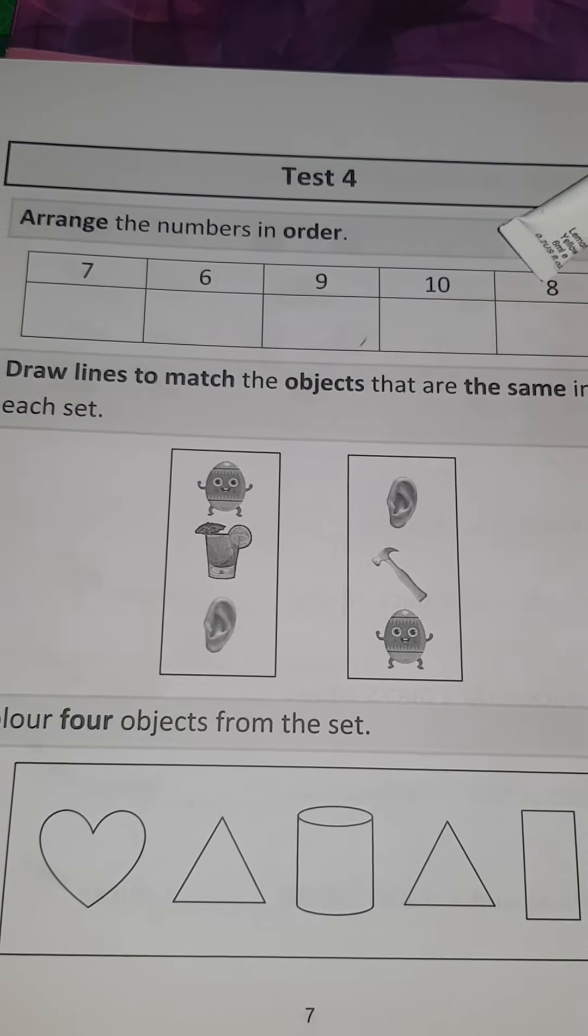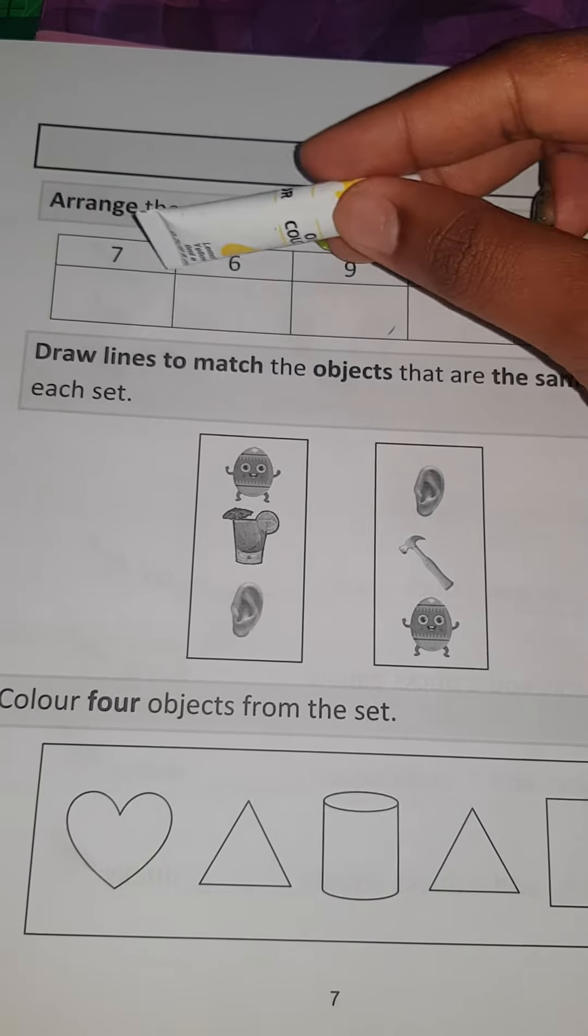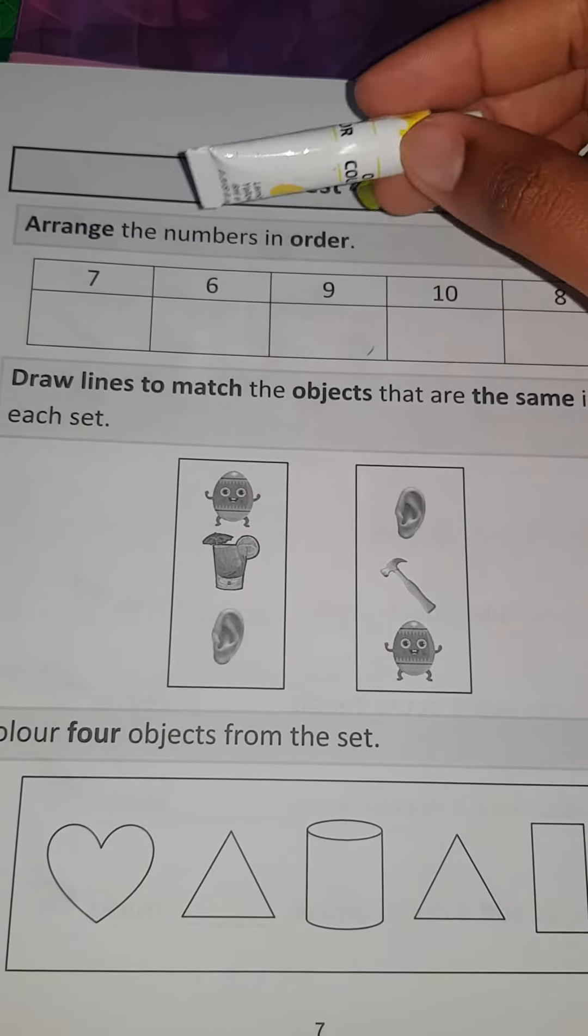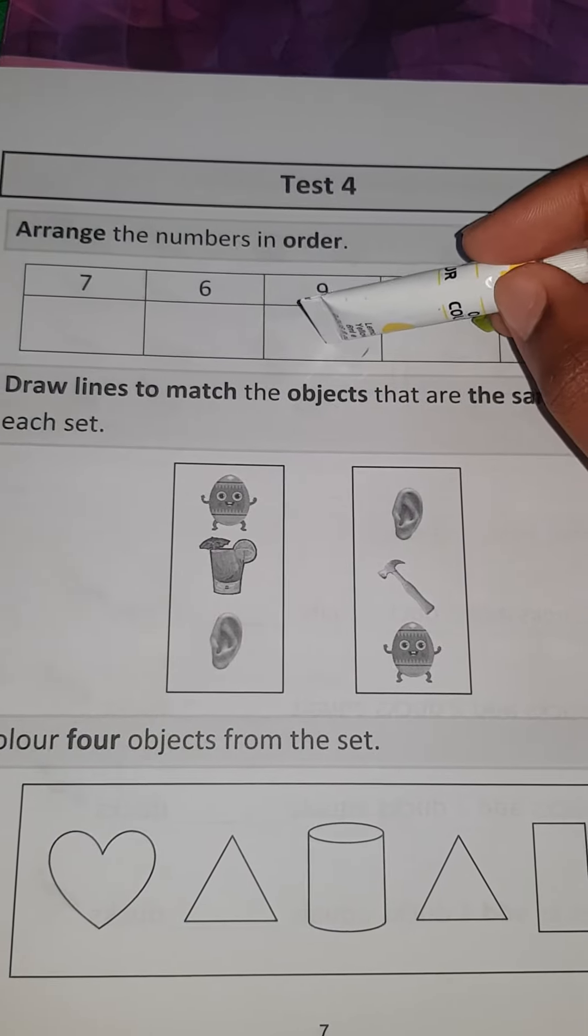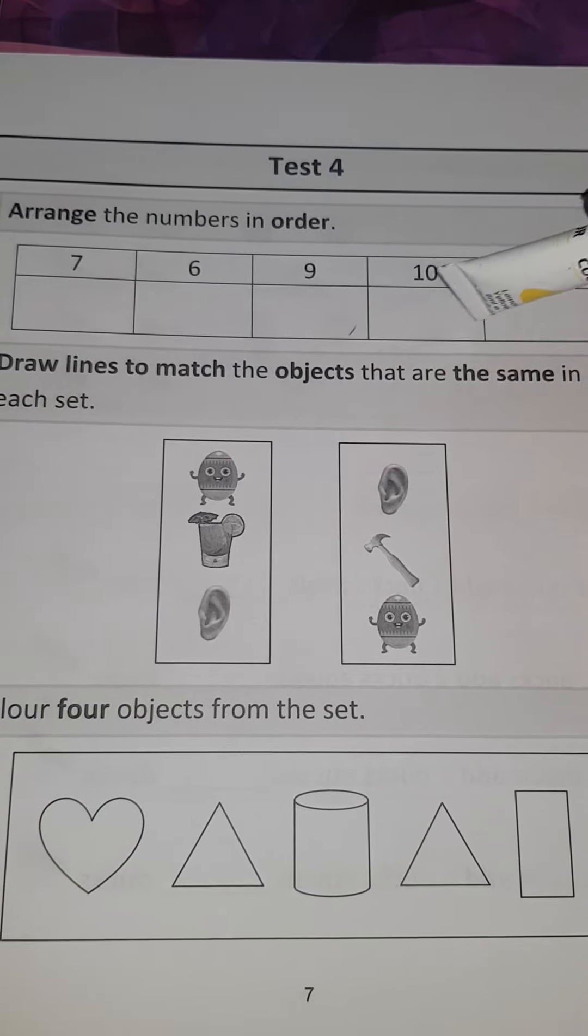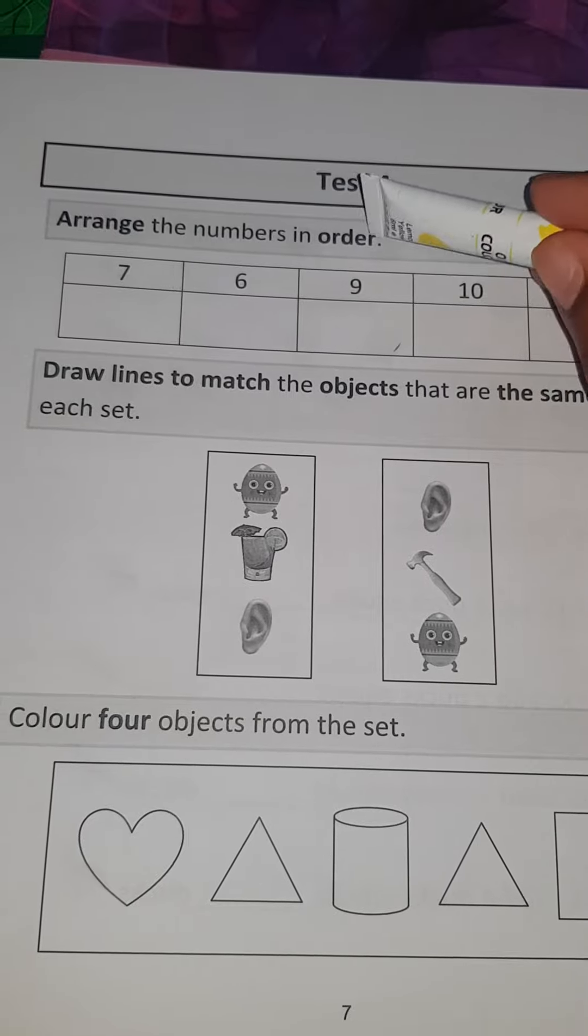What is next? Is it 10? 6, 7, 10? No. It'll be 6, 7, 8. So 8 goes next. Now you figure out what two numbers come after because we're arranging the numbers in order.